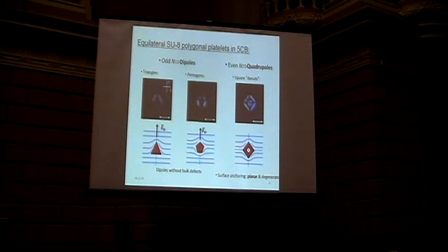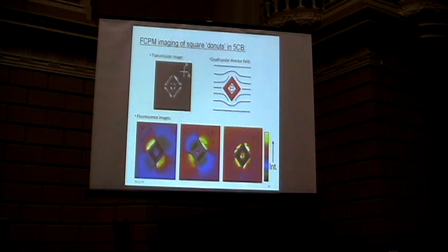And so in this case here, you would see the same texture if you had homeotropic anchoring and you didn't really have any bulk defects. So we use this technique to sort of unambiguously demonstrate that the field is most definitely quadrupolar, and then you have planar anchoring.